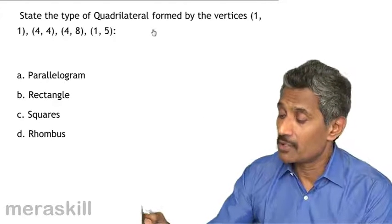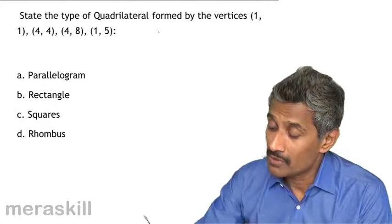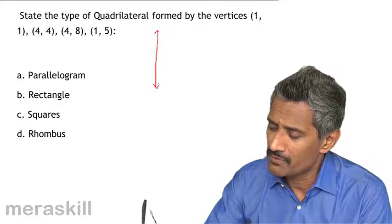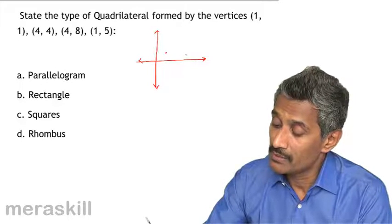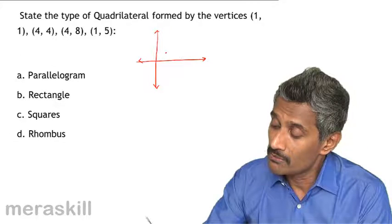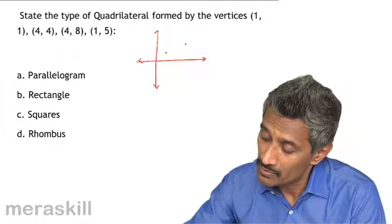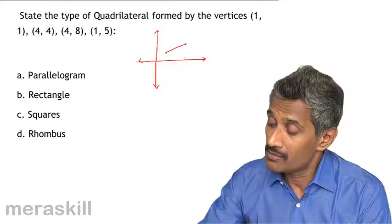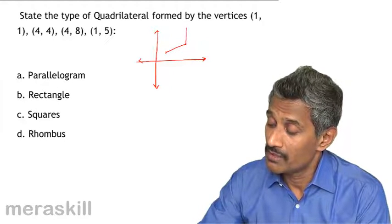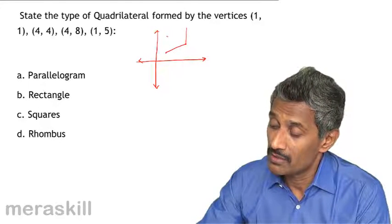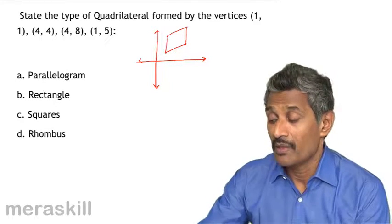State the type of quadrilateral formed by the vertices (1,1), (4,1), (4,4), (4,8), and (1,5). The best thing to do is just draw a rough picture — it will be easier. So 1 comma 1 could be here, 4 comma 4 here, 4 comma 8 here, and 1 comma 5 here. This looks like a parallelogram.